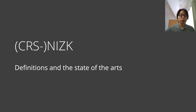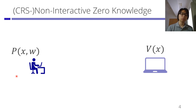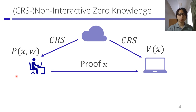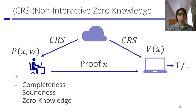We will first provide some background on CRS NIZK. A CRS NIZK is between a prover and a verifier. The prover holds a statement X and a witness W. They're both given a CRS from a trusted setup, a common reference string, and the prover provides a proof pi, and the verifier either accepts or rejects. We require three properties: completeness, soundness, and zero knowledge.